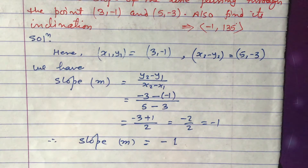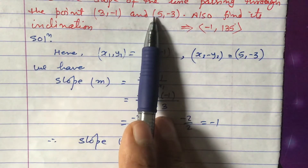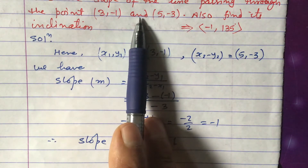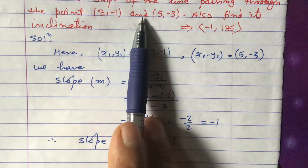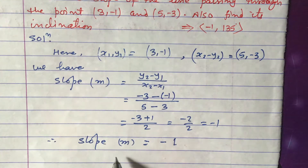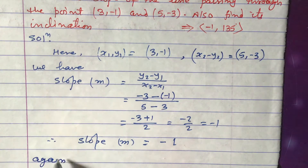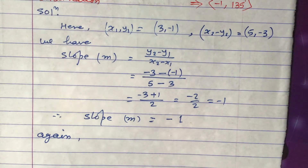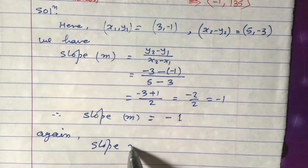We need to find the angle made by the line joining these two points, and that angle must be measured with the positive direction of the x-axis. To find that, we use another formula that defines slope in terms of inclination.